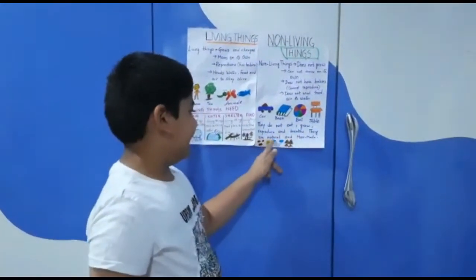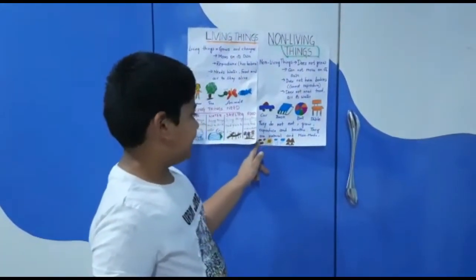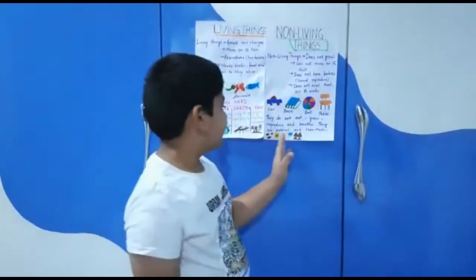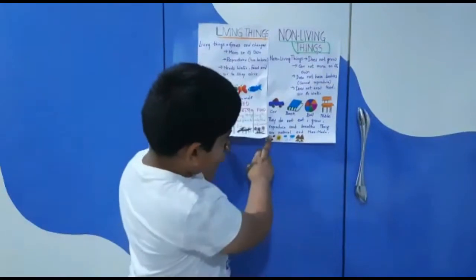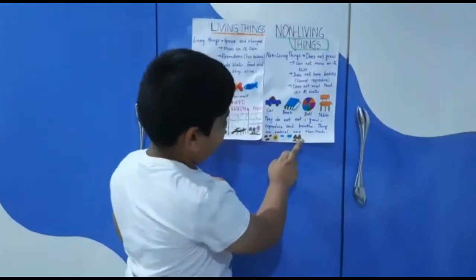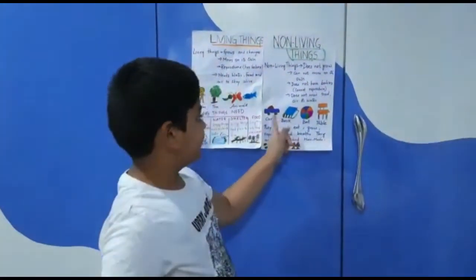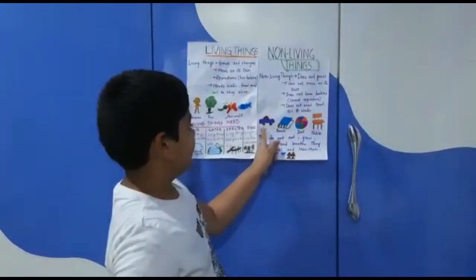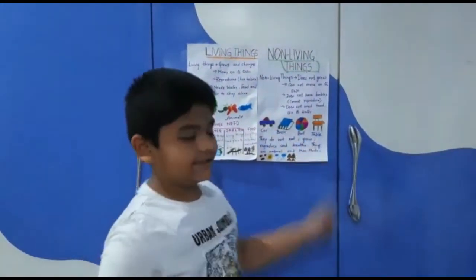Non-living things are natural and man-made. Natural things are which are made on their own by nature — like rock, sun, clouds, and mountains. Man-made things are made by people — like car, book, ball, and table.